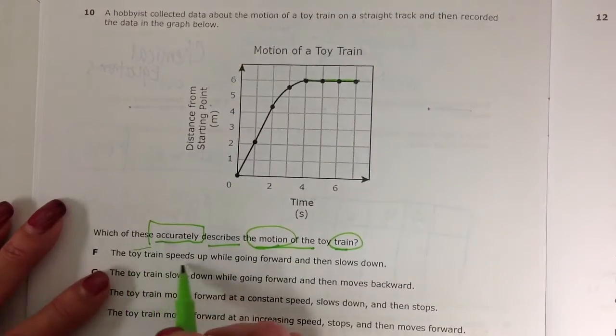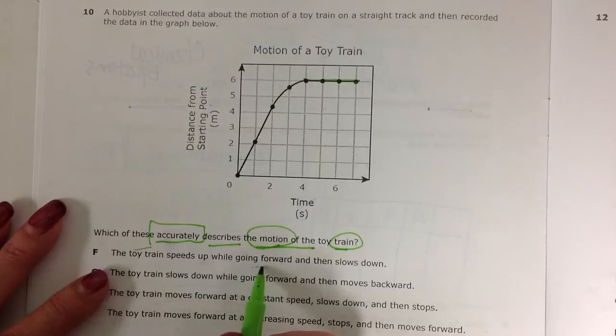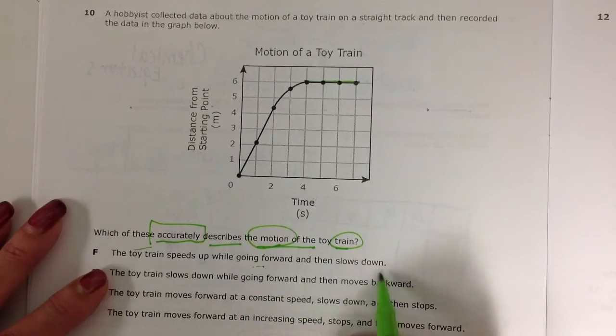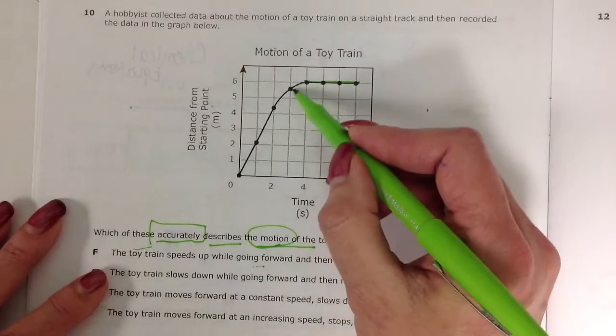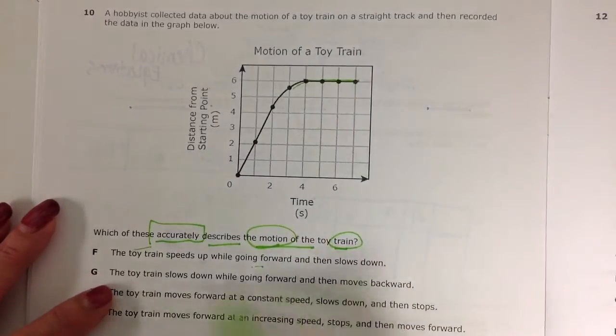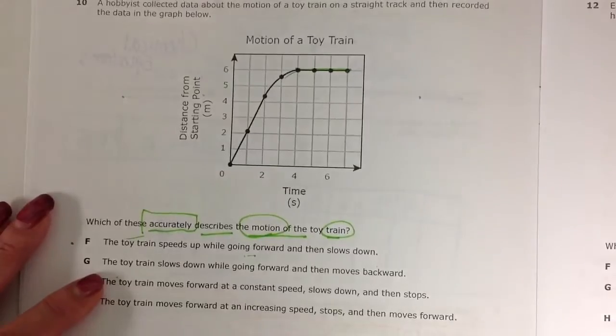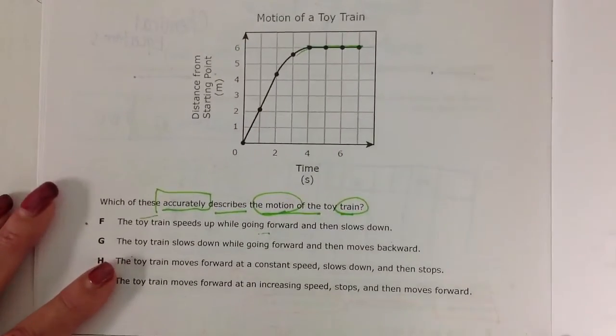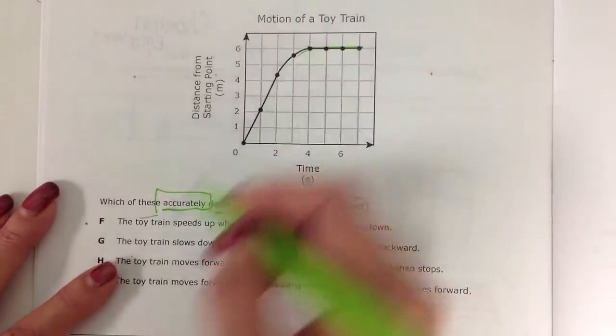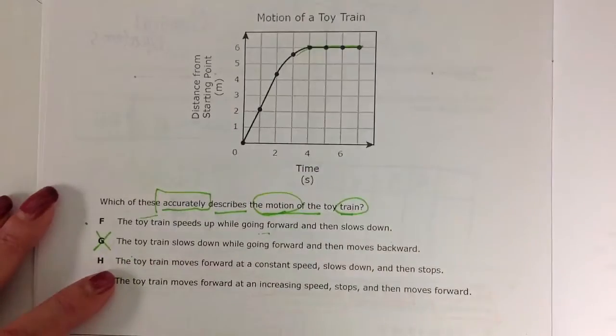So F, the toy train speeds up while going forward and then slows down because it's speeding up and kind of slowing down and coming to a stop. Toy train slows down while going forward and then moves backwards. Well, that's something that we can't see here, and it's definitely not slowing down initially. It's speeding up.